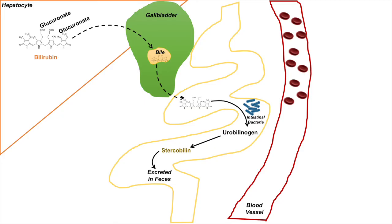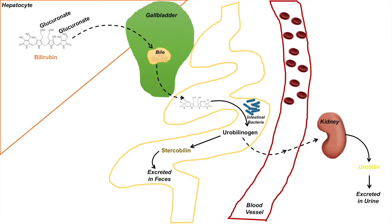Not all urobilinogen will actually be converted into stercobilin in the small intestine. Some of it will actually be reabsorbed back into your bloodstream. It'll be transported in your blood to the kidneys, where the urobilinogen will be converted into urobilin, which is then excreted in your urine. Urobilin is a pigmented molecule and it's yellowish in coloration, which is the reason why your urine is yellow.